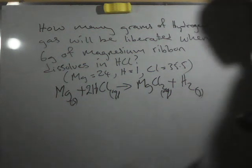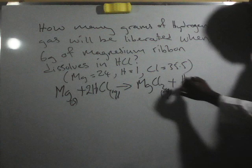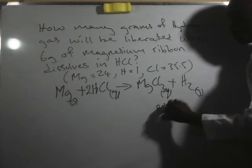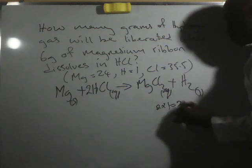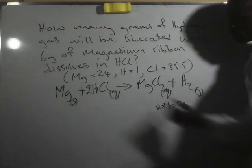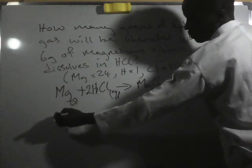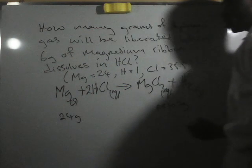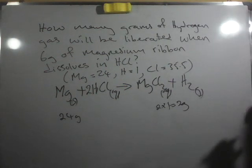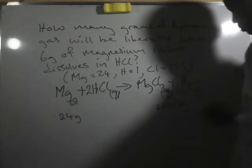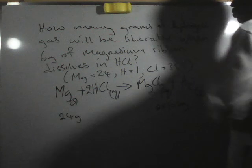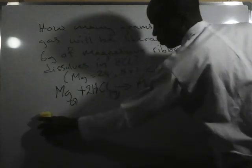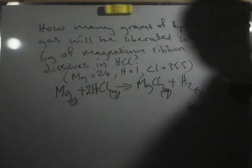Looking at this, the molar mass of hydrogen here is 2 times 1, which gives us 2 grams. For the magnesium, we have 24 grams molar mass. From this balanced equation, there are many things you can note, but I want to limit it to the question we are dealing with.